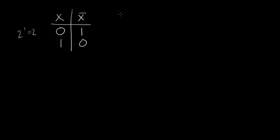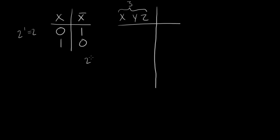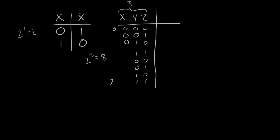Suppose I have three inputs: x, y, z. I need two to the three — eight rows, from zero all the way to seven. I'll count in binary to fill these in. It's faster to go top to bottom column-wise rather than row by row left to right.